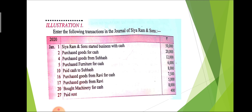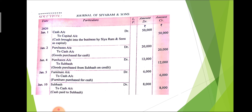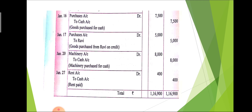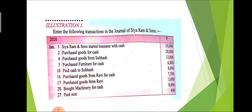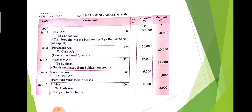Next: bought furniture for cash — the purchase word is used only with goods, not with other assets like machinery. So when machinery comes into the business, machinery account is debited, and cash goes from the business so cash is credited. The journal entry is: machinery account debit to cash account. Then: paid rent — rent is one type of expense, and all expenses are debited, with cash going from the business. The journal entry is: rent account debit to cash account.